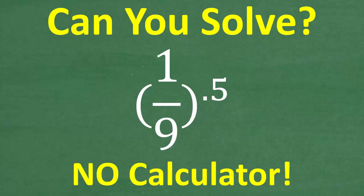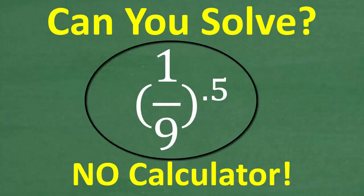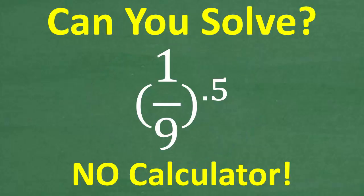Solving this math problem without the aid of a calculator is actually very easy. Let's go ahead and take a look at the problem. We have 1/9 to the 0.5 power. If you could figure this out, go ahead and put your answer into the comment section. We'll walk through exactly how to solve this problem step by step.